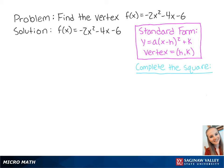But first, we want the coefficient of x² to be equal to 1. So we're going to factor out the -2 to get us f(x) = -2(x² + 2x + 3).